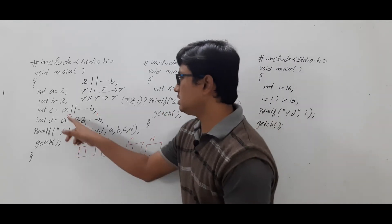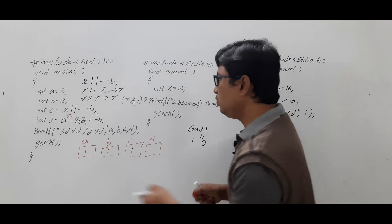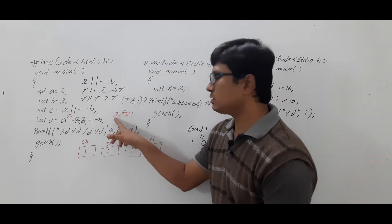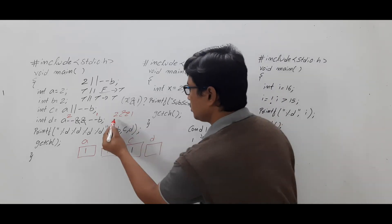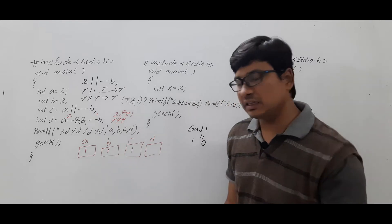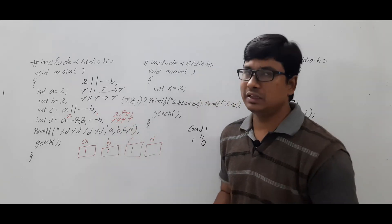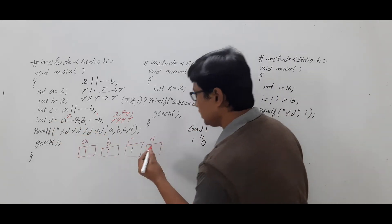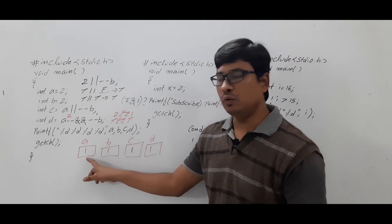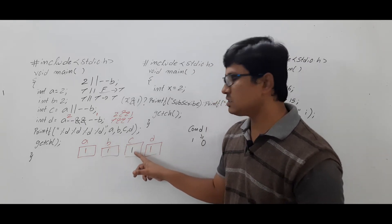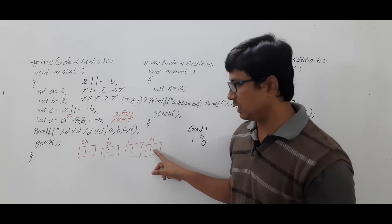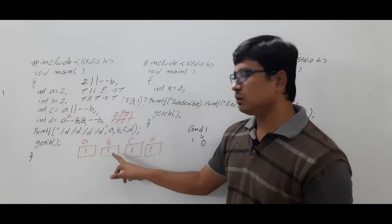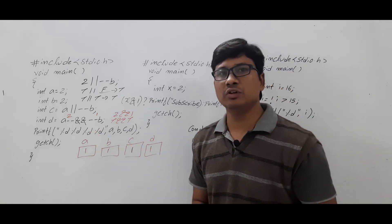So we have 2 and 1 in the logical AND expression. 2 is other than 0, so it is true. 1 is other than 0, so it is true. True AND true — the entire condition is true, so d gets the value 1. Now: a = 1, b = 1, c = 1, d = 1. So the output of this program is 1, 1, 1, 1.